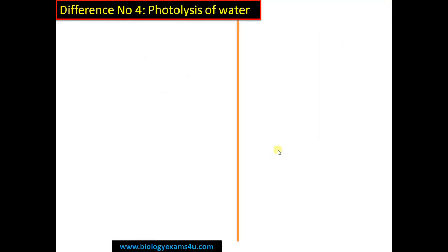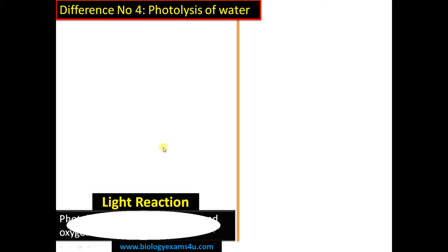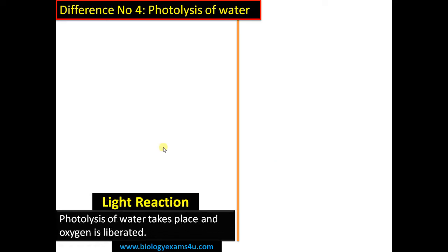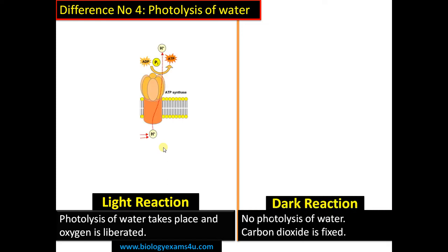Difference number four regards the photolysis of water. In light reaction there is photolysis of water. During the process, oxygen is liberated — and that is the oxygen that is released during photosynthesis.